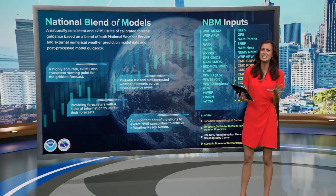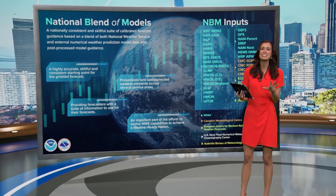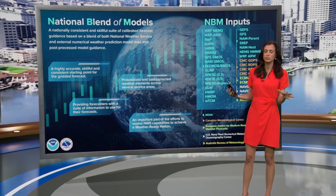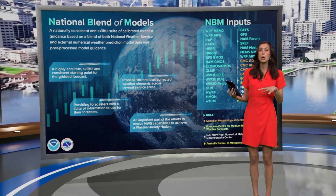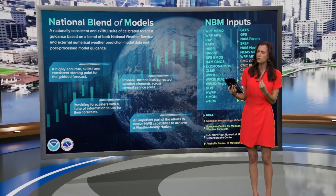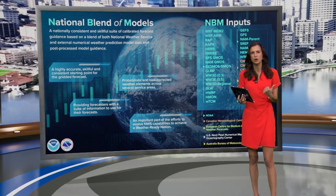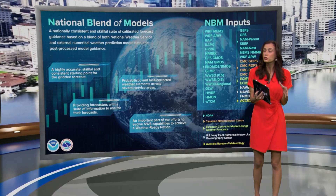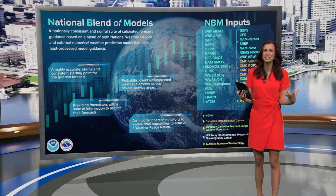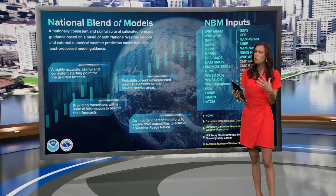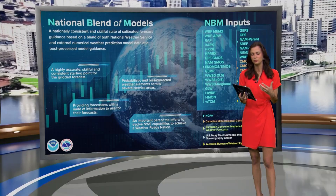There are so many other models to look at as well. This is the national blend of models, which basically combines all of the models into one — that's a great one we look at. Another one is the HRRR, which is a short-range forecast. There are long-range forecasts that we look at as well, so there are so many different models that we use to forecast the weather.